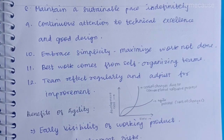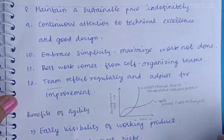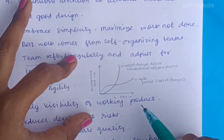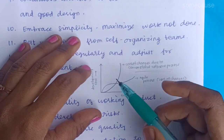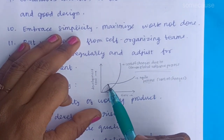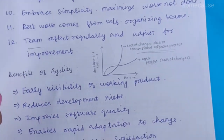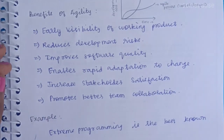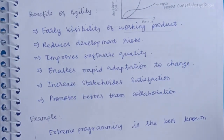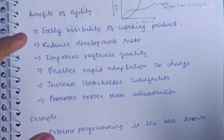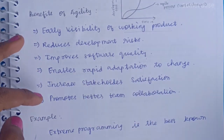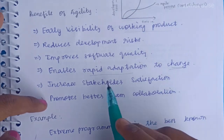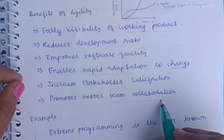Twelfth, the team reflects regularly and adjusts for improvement. In normal conventional development, the cost of changes is high, but if we use the agile process, the cost of changes is low. The benefits include: development risk reduced, software quality improved, ability to adapt to changes, stakeholder satisfaction increased, and team collaboration promoted.